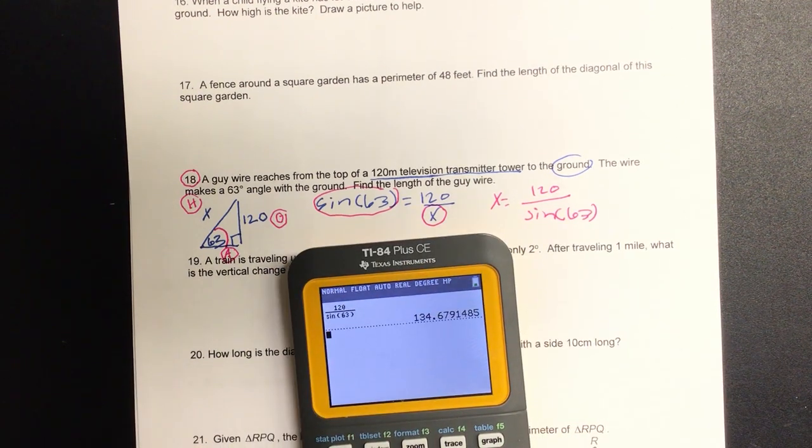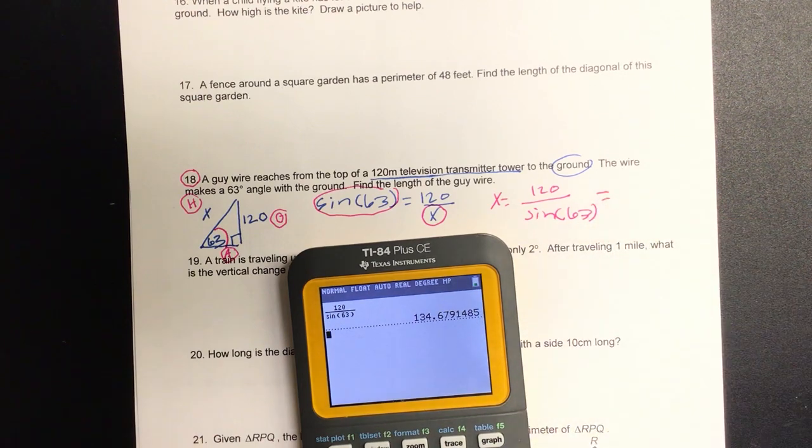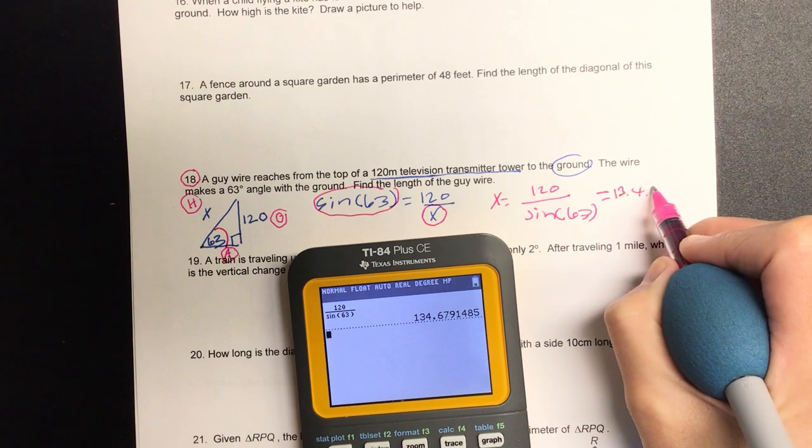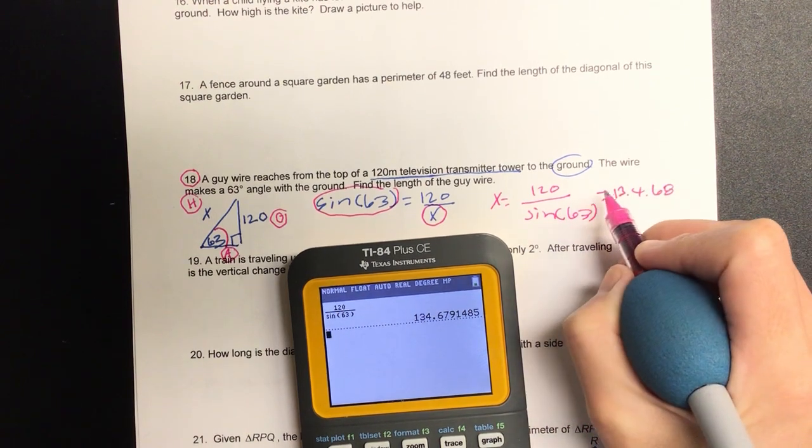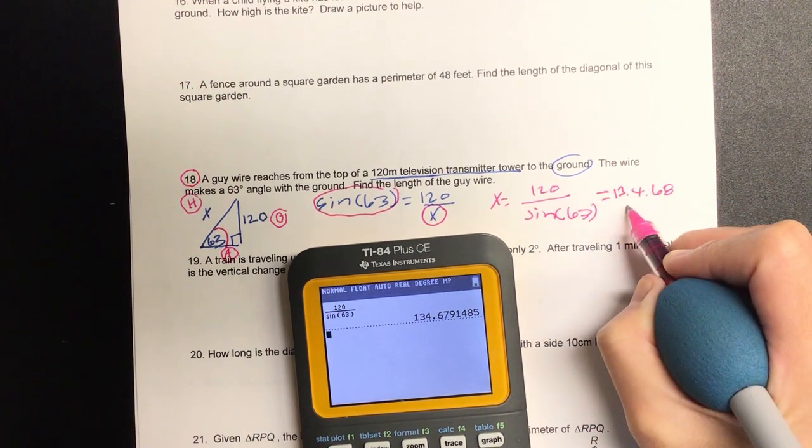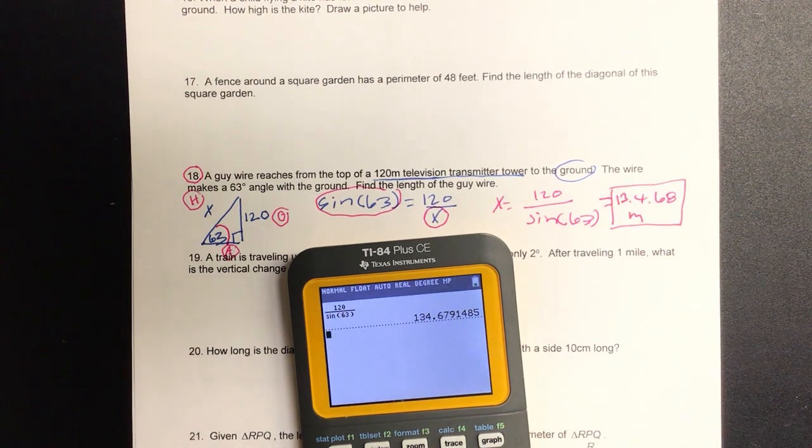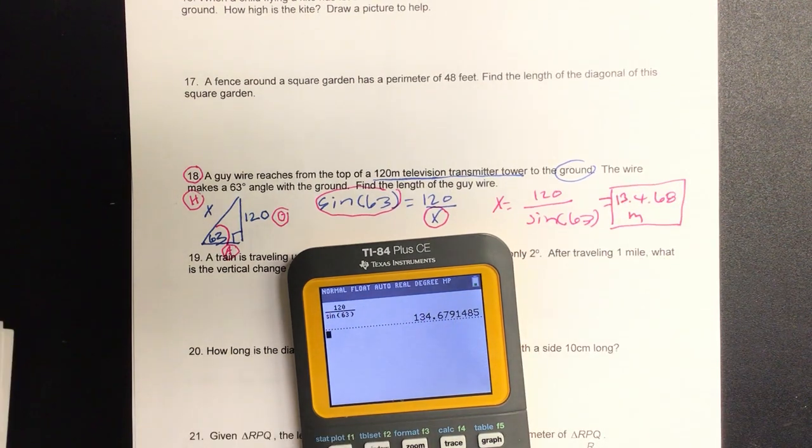So when I press enter, always double check that the number is relevant. So we're looking at this to two decimal places. So one hundred thirty-four point, how many? Six eight. Very good. And for this one, just to be more accurate, the same: meters.